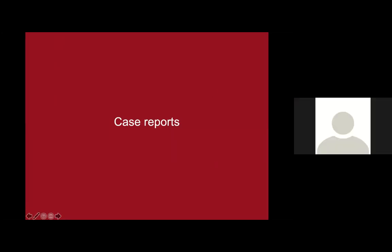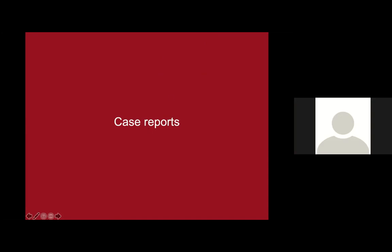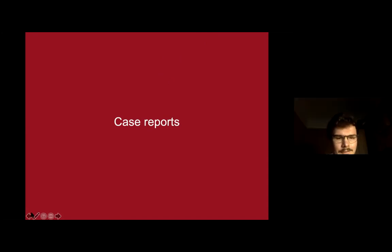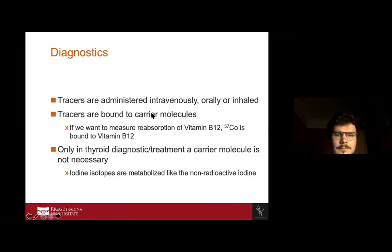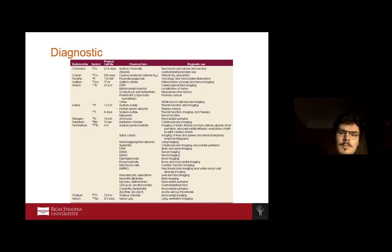There is a question in the chat about the benefit of different tracers. The benefit is that each tracer has a specific target. For example, cobalt binds to vitamin B12, and there is no other tracer on the list that binds to vitamin B12. So every tracer has a specific diagnostic use, and if we want to track vitamin B12, the only option is cobalt — even though it has an immensely long half-life.